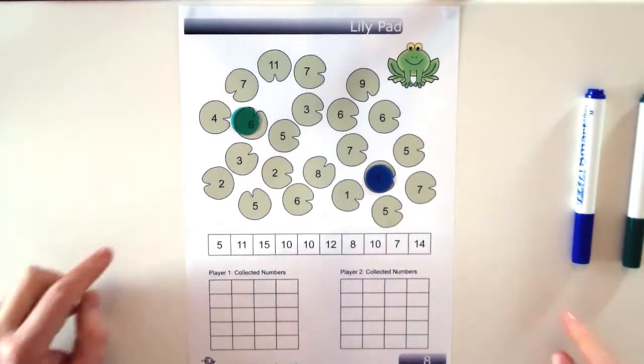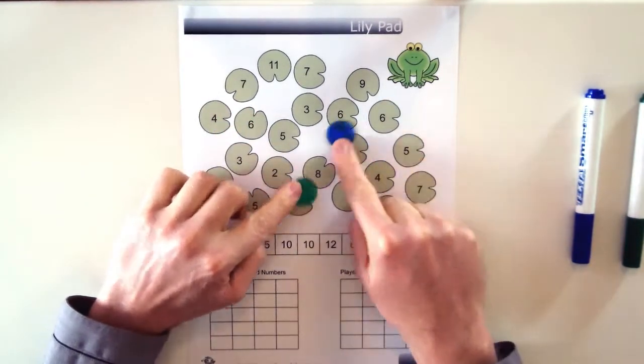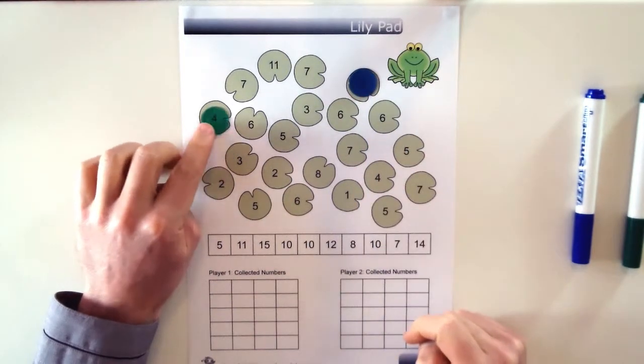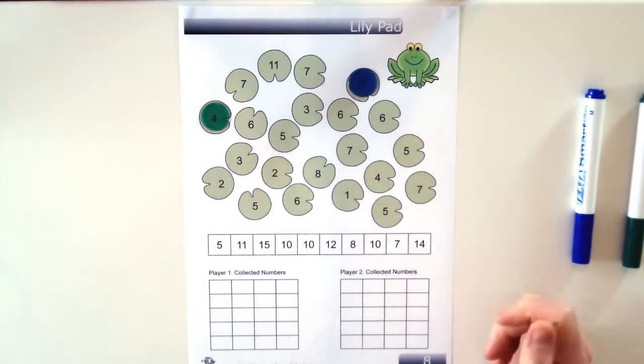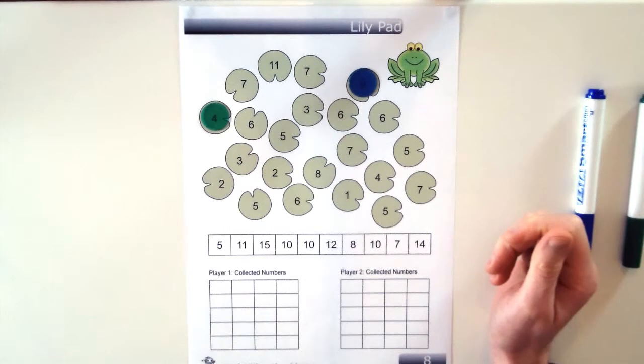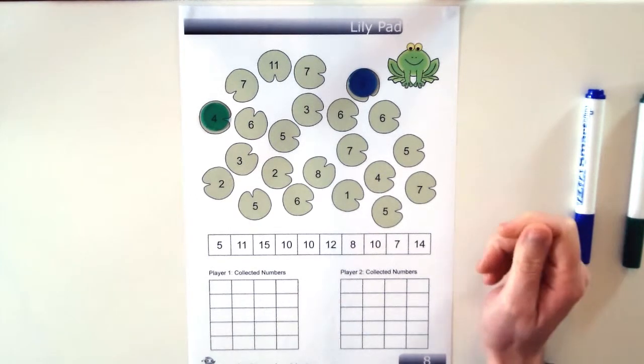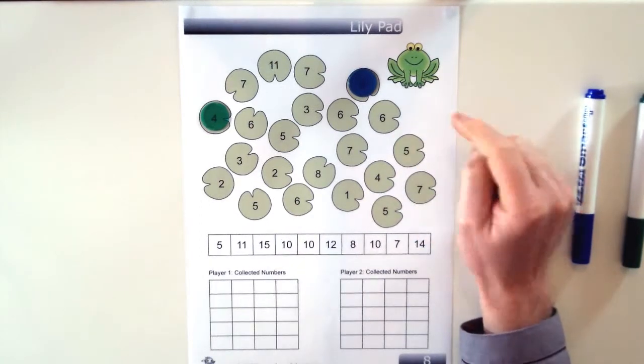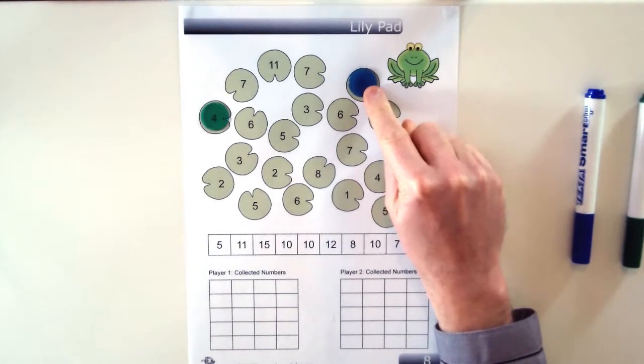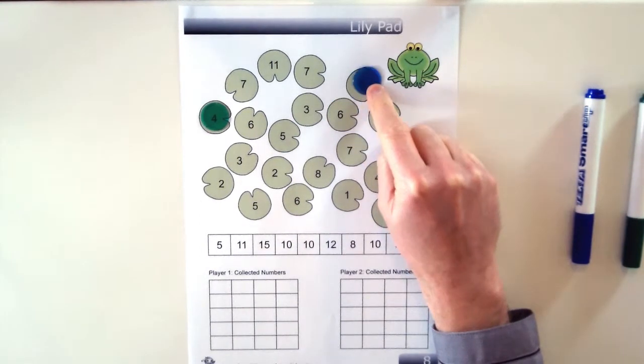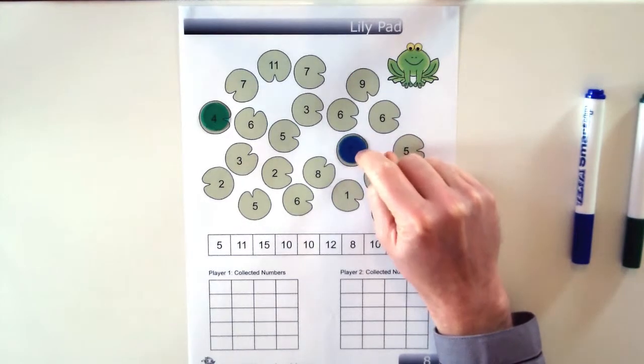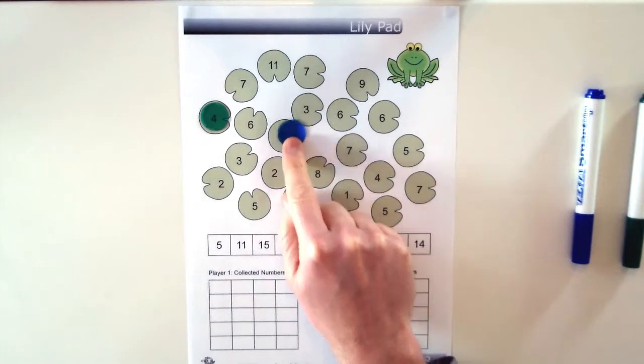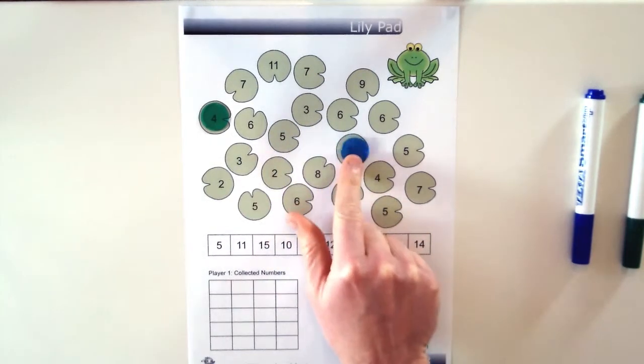To start off Lilypad, players get to choose any lilypad to start from. So blue can start from the 9 up here and green can start from the 4. When they move they can only move 1 or 2 spaces to lilypads which are right next to them. So blue could move to the 6 or they could move 2 places to the 7. But if they were on the 7 they wouldn't be able to move to the 5 because it's too far away.